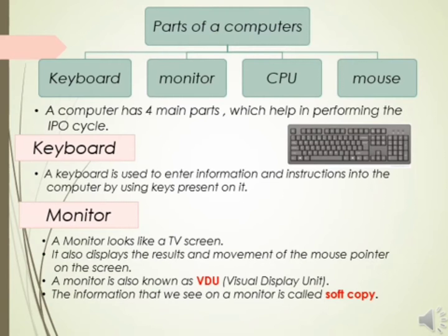It also displays the result and the movement of the mouse pointer on the screen. That means all the work that we do on a computer system is visible on a monitor. A monitor is also known as VDU, that is Visual Display Unit. The information that we see on a computer monitor is called a soft copy.